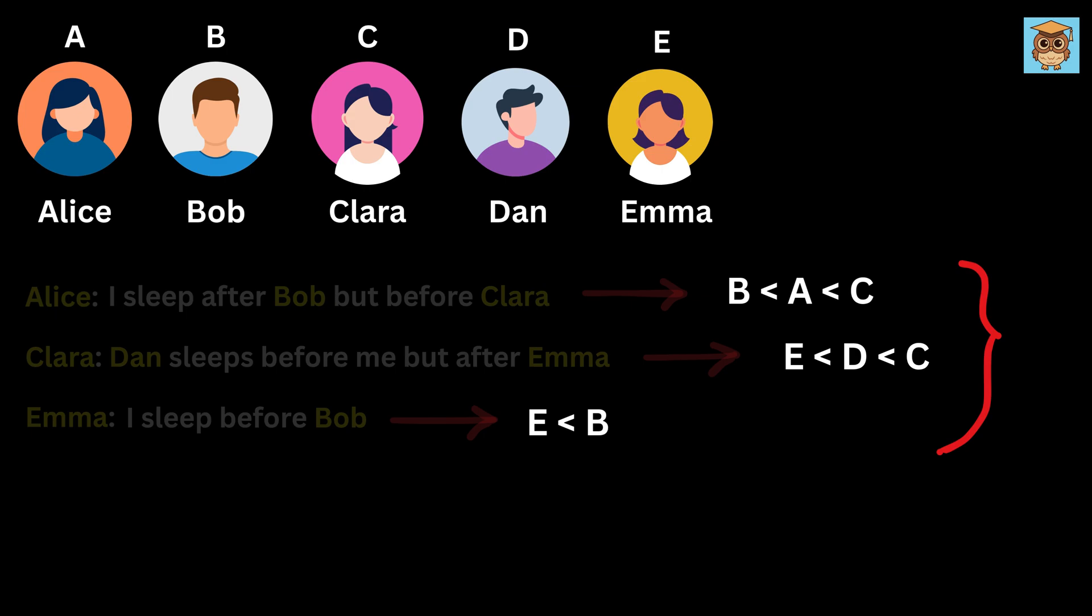Now let us connect all the clues. From Emma's statement, we know that E is less than B, and from Alice's statement, B is less than A, and A is less than C. So after combining them, we get the order E, B, A, and C.